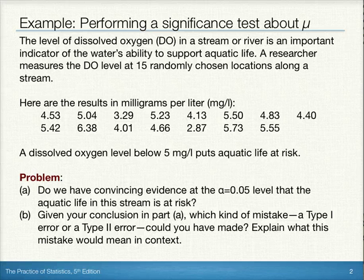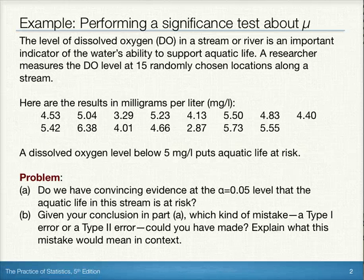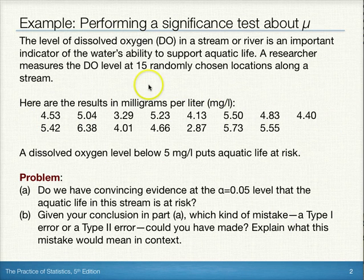The level of dissolved oxygen, DO, in a stream or river is an important indicator of the water's ability to support aquatic life. A researcher measures the DO level at 15 randomly chosen locations along a stream, and the results in milligrams per liter are noted here. A dissolved oxygen level below 5 milligrams per liter puts aquatic life at risk.